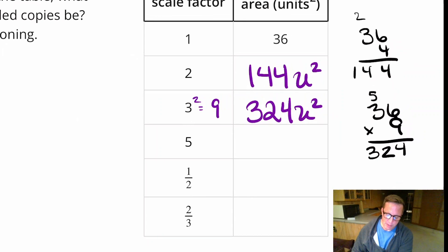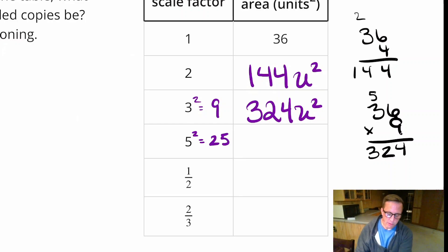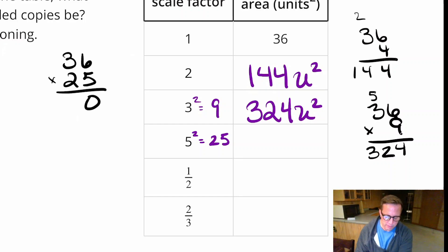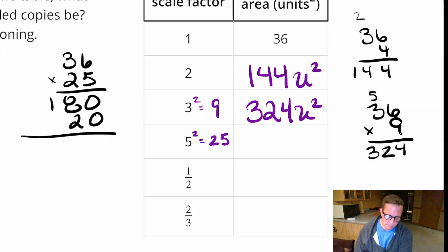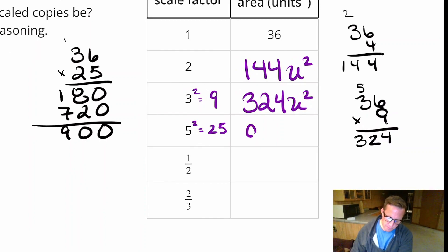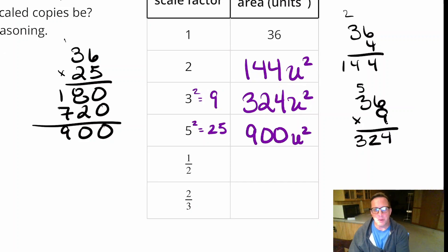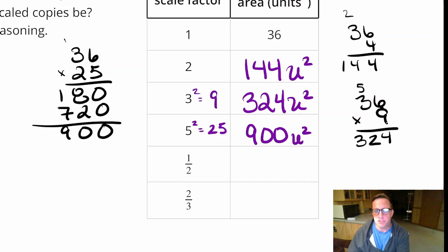Scale factor 5: 5 squared is 25 times greater. 36 times 25 — working that out gives 900 square units. You can see the area changes by a lot when scale factors are greater than 1. It's not just doubling and tripling — it's squaring. It's an exponential change, changing by an exponent of 2.